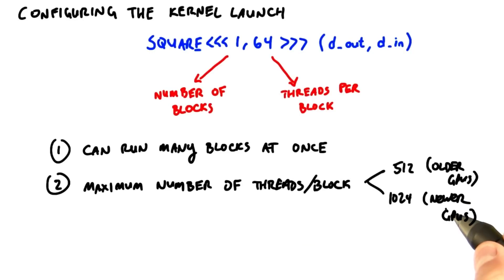Newer GPUs can support 1024 threads per block. Older GPUs can only support 512. So when you have lots of work to do, you'll divide that work into any number of blocks, each of which has no more than 512 or possibly 1,024 threads.